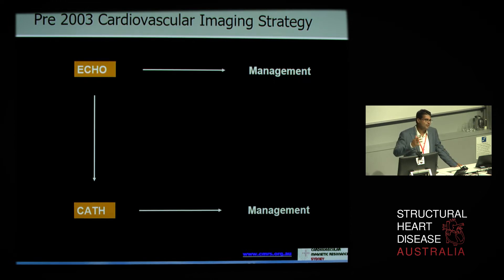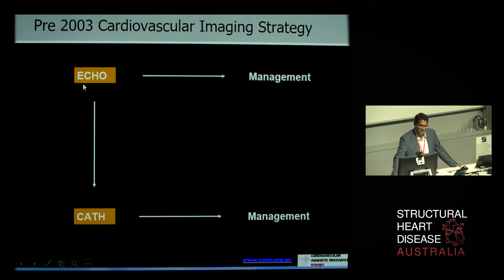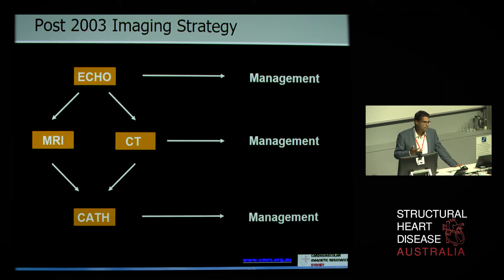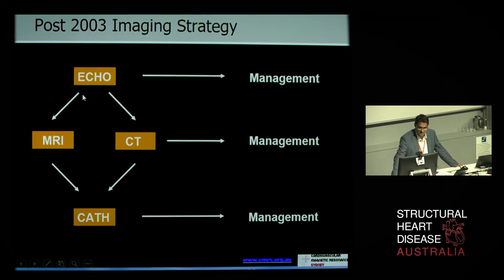So 15 years ago, the algorithm would have been we have echo and cath to solve clinical problems, and most of the time we could do it. But we recognised that there were some problems where a middle tier of imaging was really important — not all problems, but the right ventricle is one of those very challenging areas where cross-sectional imaging can have a real value add. And I hope that by the end of this talk, you'll be convinced about that.